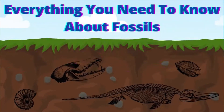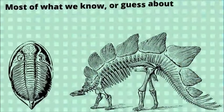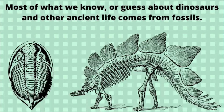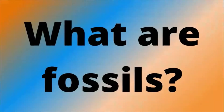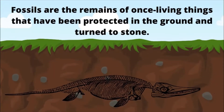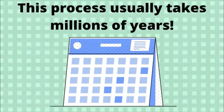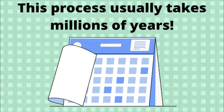Everything you need to know about fossils. Most of what we know or guess about dinosaurs and other ancient life comes from fossils. Fossils are the remains of once living things that have been protected from the ground and turned to stone. This process usually takes millions of years.